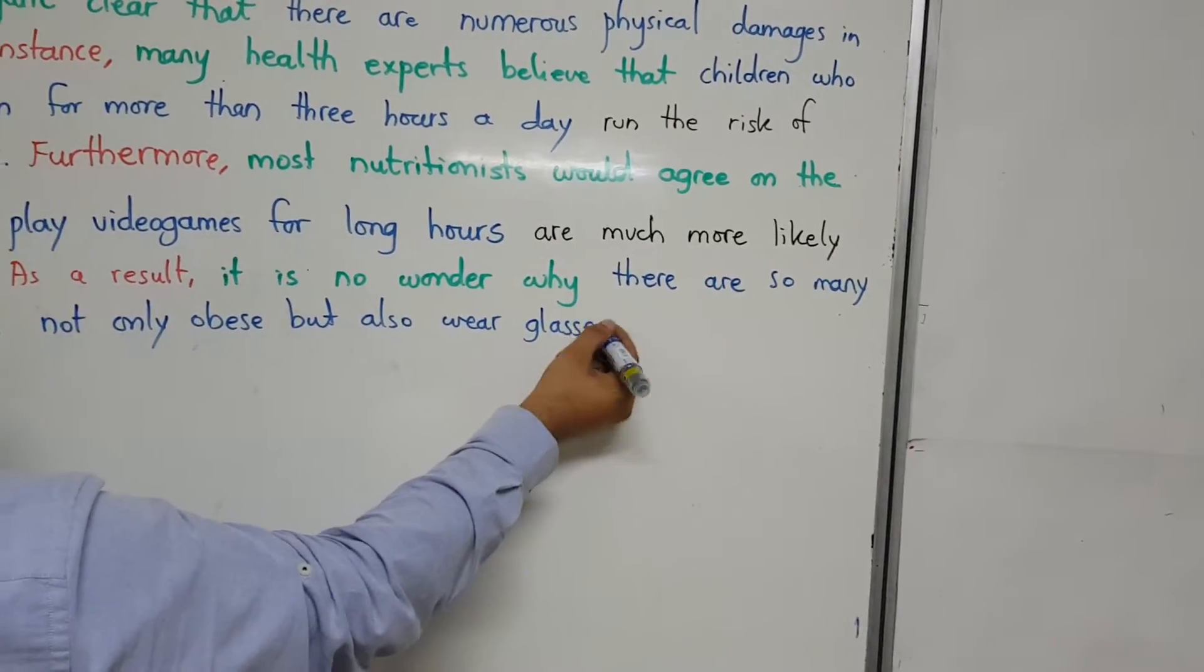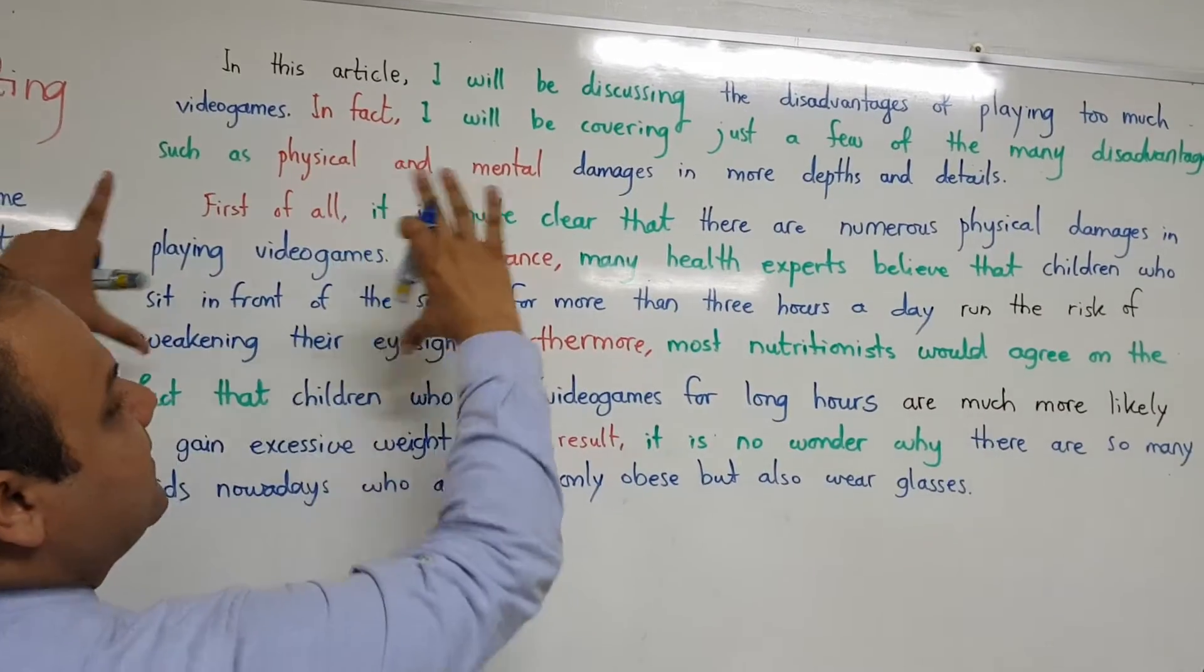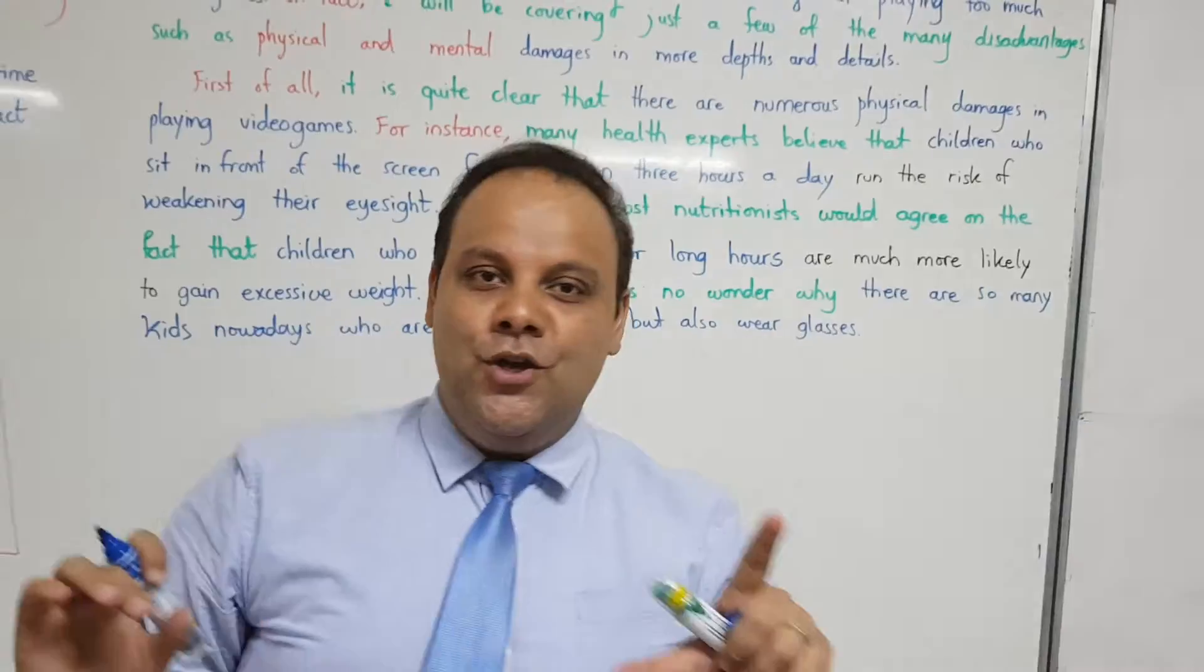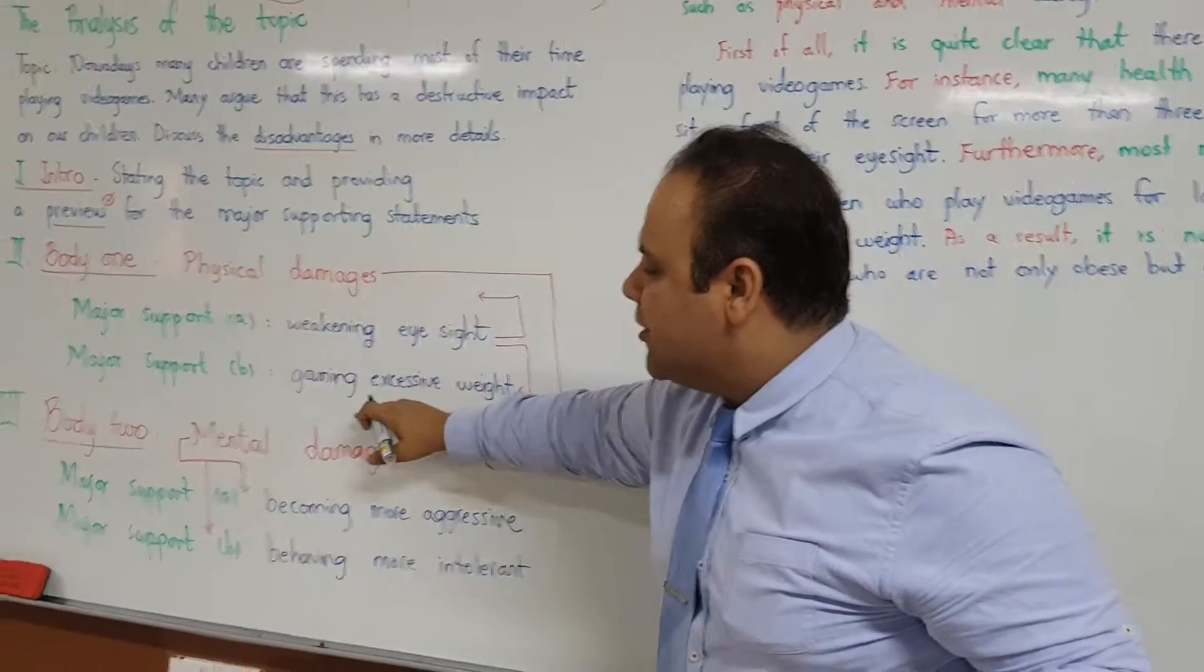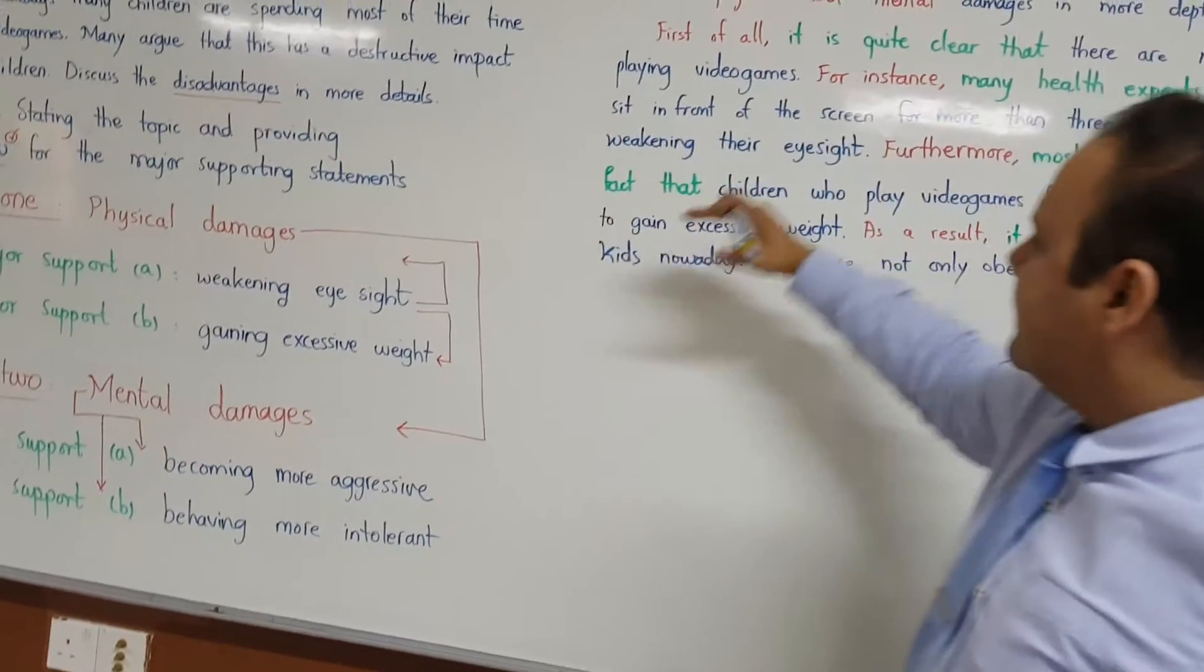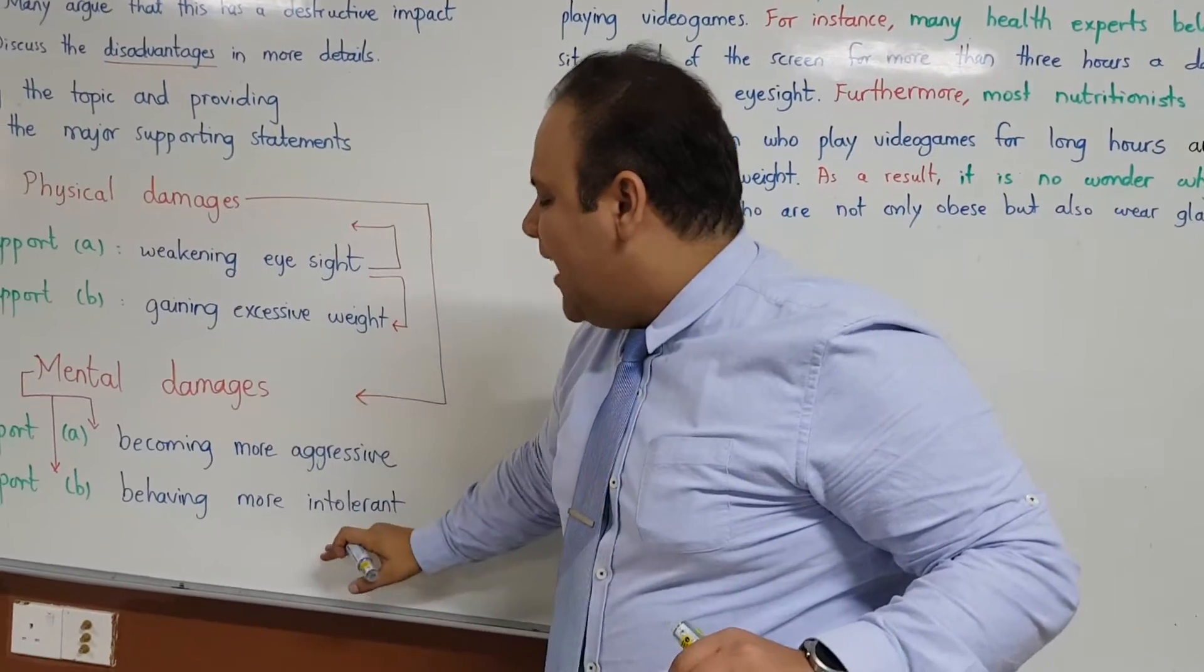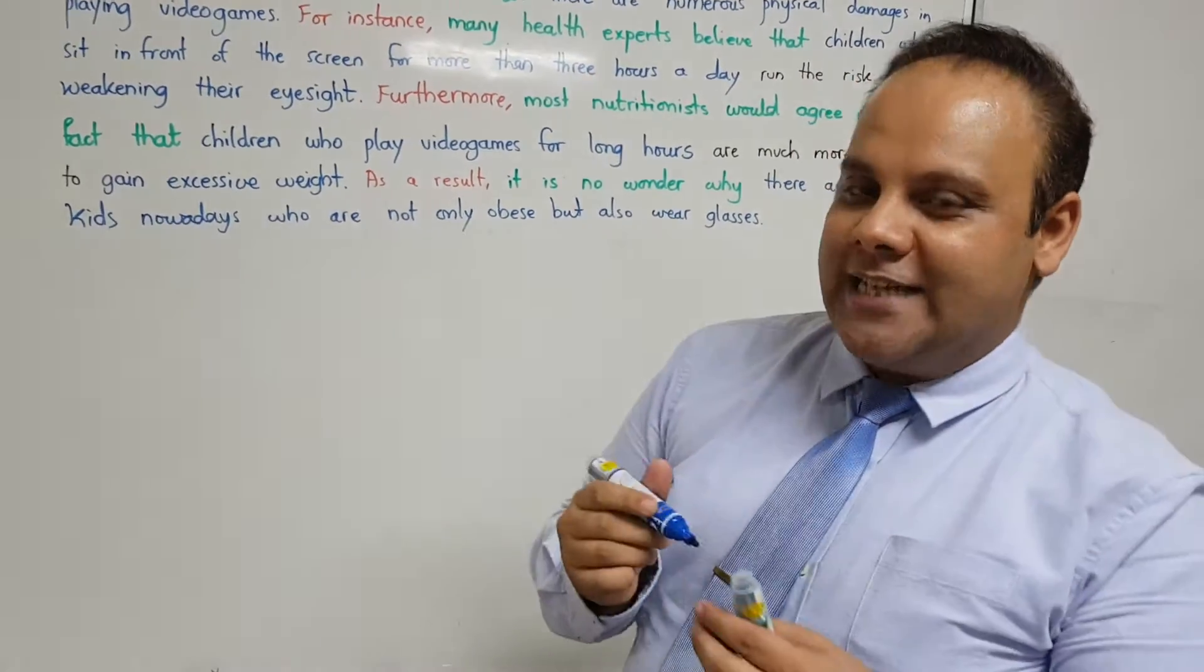Can you see that? Now, this is my body one. I'm going to use the same structure for body two. This is very important. So body one, it was physical damages. We can gain excessive weight. Body two will be aggressive and intolerance, and we're going to place that right here. So pay close attention.